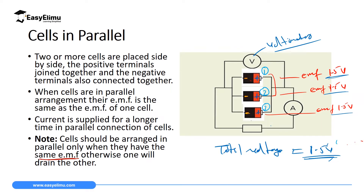But if their EMFs are not the same, then it means one will drain the other. For example, if you have three cells — one has an EMF of 1.2 volts, another has 1.5 volts, and another has 1.5 volts — then the one with 1.2 must drain the one with 1.5 first until they reach the same voltage, like in this case 1.375 volts. When all of them reach the voltage of 1.375, then they can supply equal voltage afterwards.